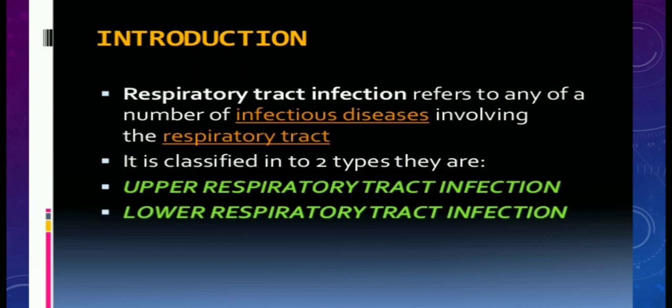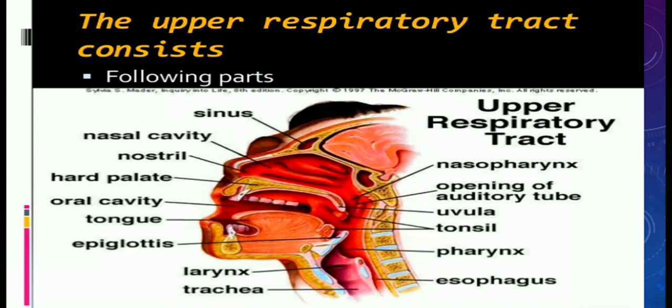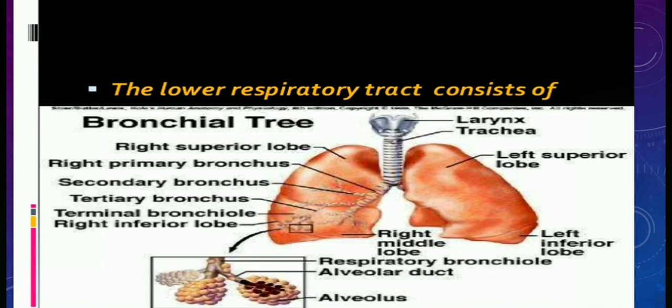In this picture you can see all the organs which are part of the upper respiratory tract, starting from the sinus, nasal cavity, tonsils, hard palate, oral cavity, tongue, epiglottis, larynx, trachea, nasopharynx, opening of the auditory tube, pharynx, and esophagus. This picture also shows the organs included in the lower respiratory tract.